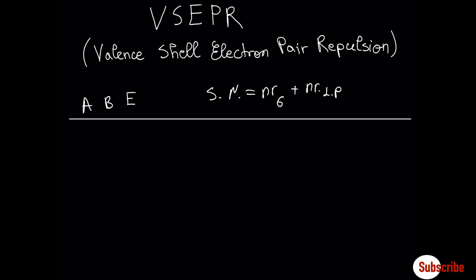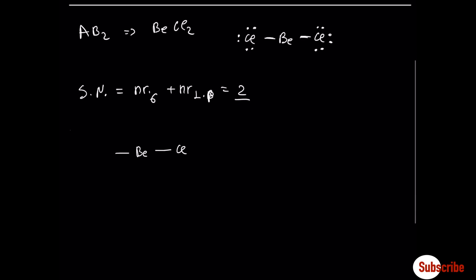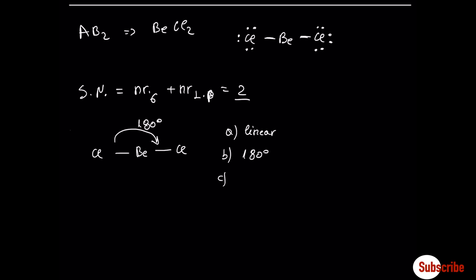Let's start with a simple example: AB2. A typical one is beryllium dichloride. First we have to draw the Lewis structure. The steric number is number of sigma bonds plus number of lone pairs. In this case, we have only two sigma bonds, so the steric number is two. According to VSEPR theory, this molecule is linear, with an angle of 180 degrees. The molecule is nonpolar because dipole moments cancel each other.